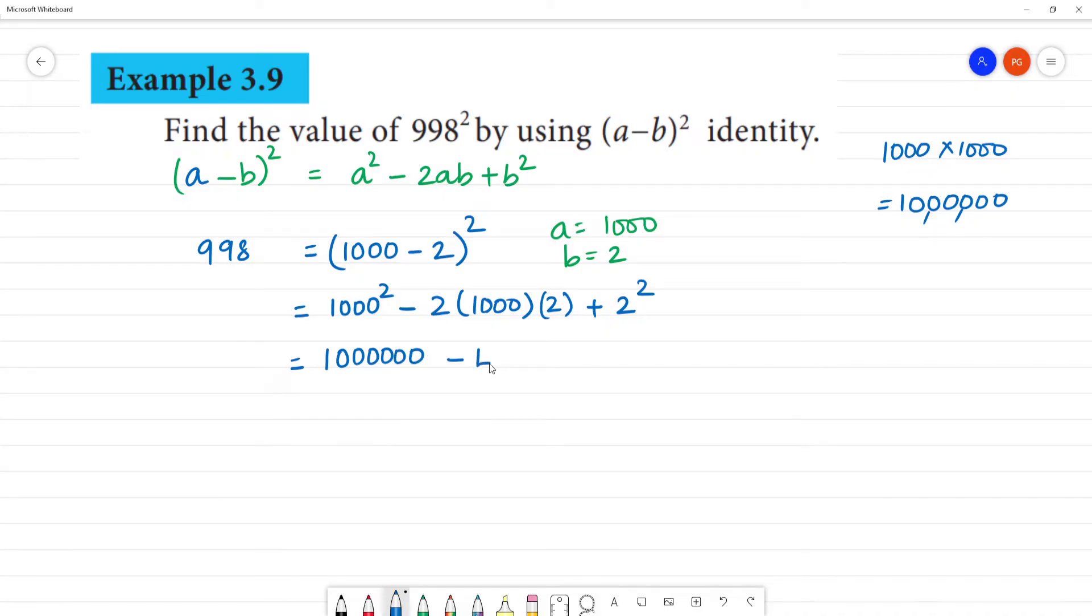Minus 2 into 2 will be 4. So here's the value of 4,000 plus 4. So now 10 lakhs, this is 10 lakhs, this is 4,000 and 4. So here's the value of 4, add. Next subtract, what to do is 4,000 subtract.